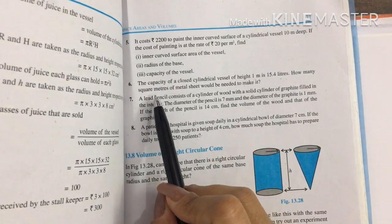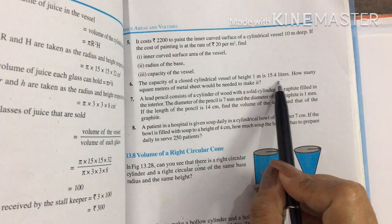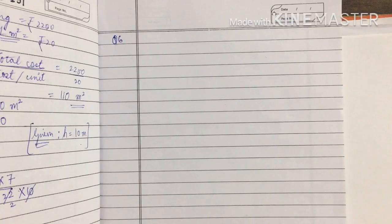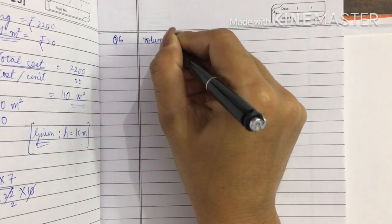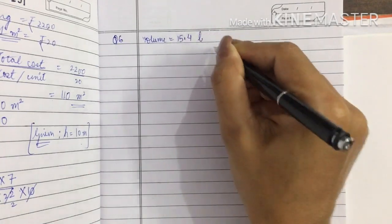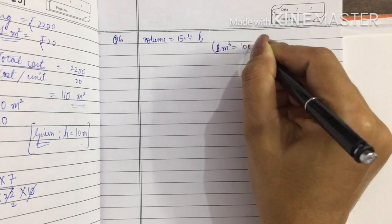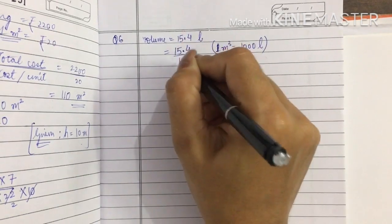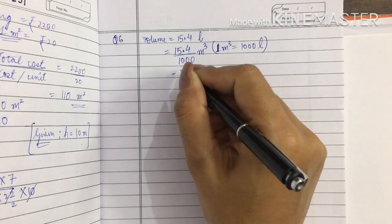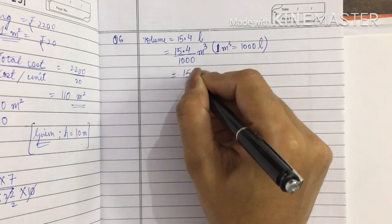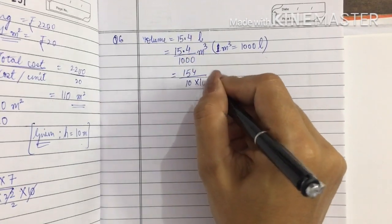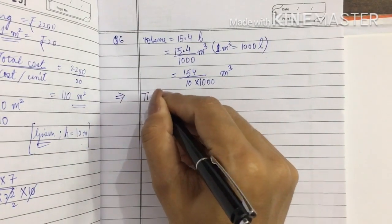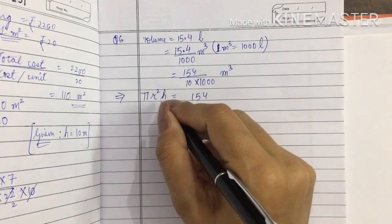Since they ask for the answer in square meters, we will work in meters, converting volume from liters to meter cube. Volume equals 15.4 liters; since 1 meter cube equals 1000 liters, dividing by 1000 gives us the volume in meter cube. Converting to a fraction by removing the decimal point gives 154 over 10,000. We also know that the volume equals πr²h, so πr²h = 154/10,000.